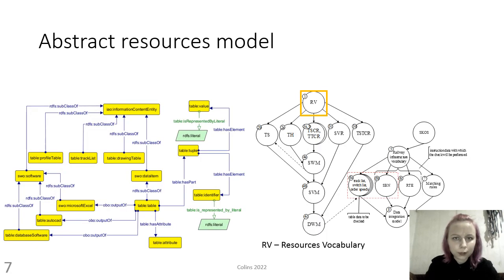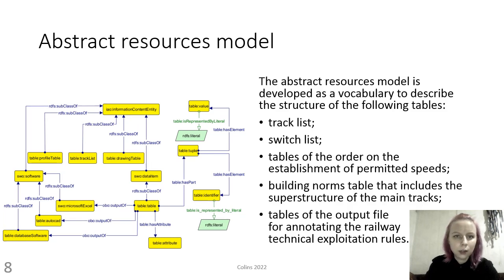The formation of the ontology is carried out in the following sequence. United vocabularies are developed to describe the table structure. The abstract resources model, shown in the diagram of the procedure for forming a modular ontology of the railway infrastructure, includes the names of tables, columns, and station attributes.